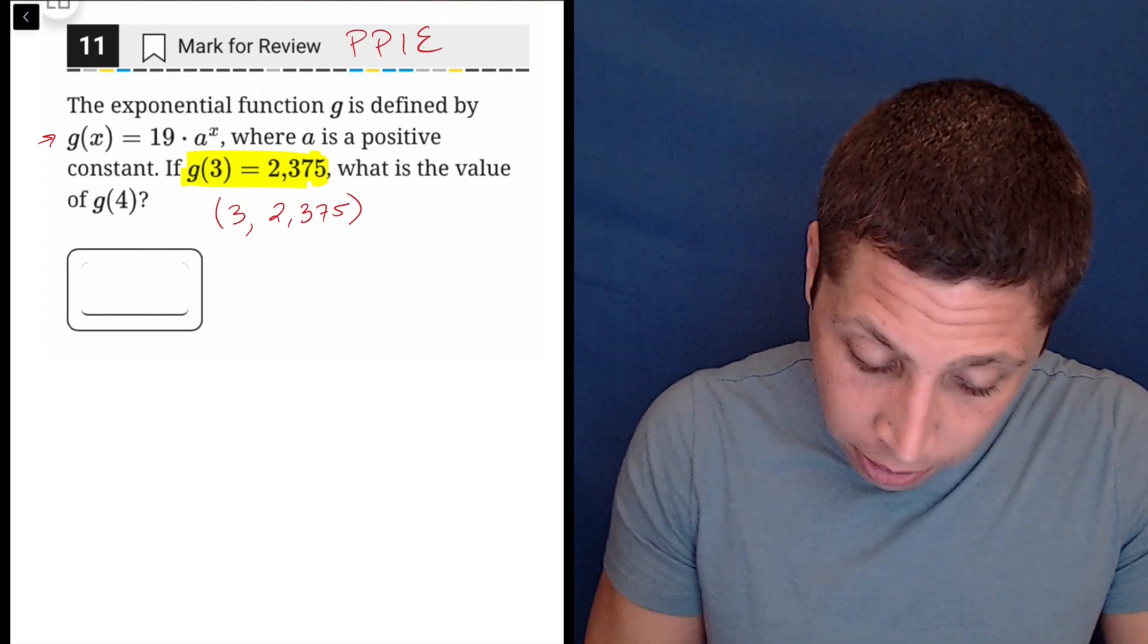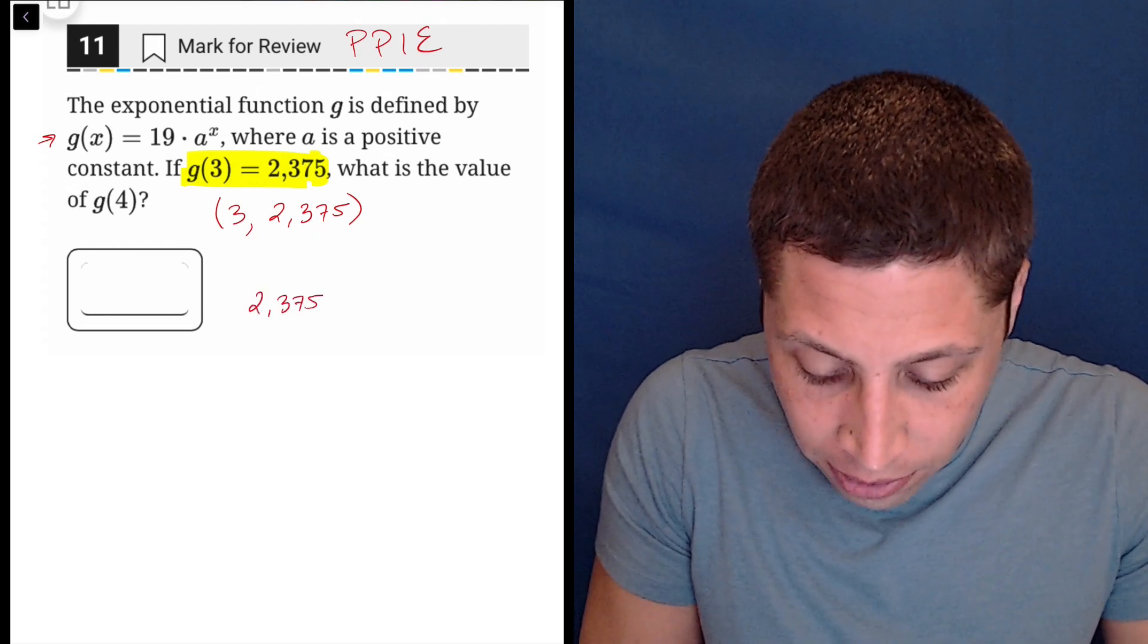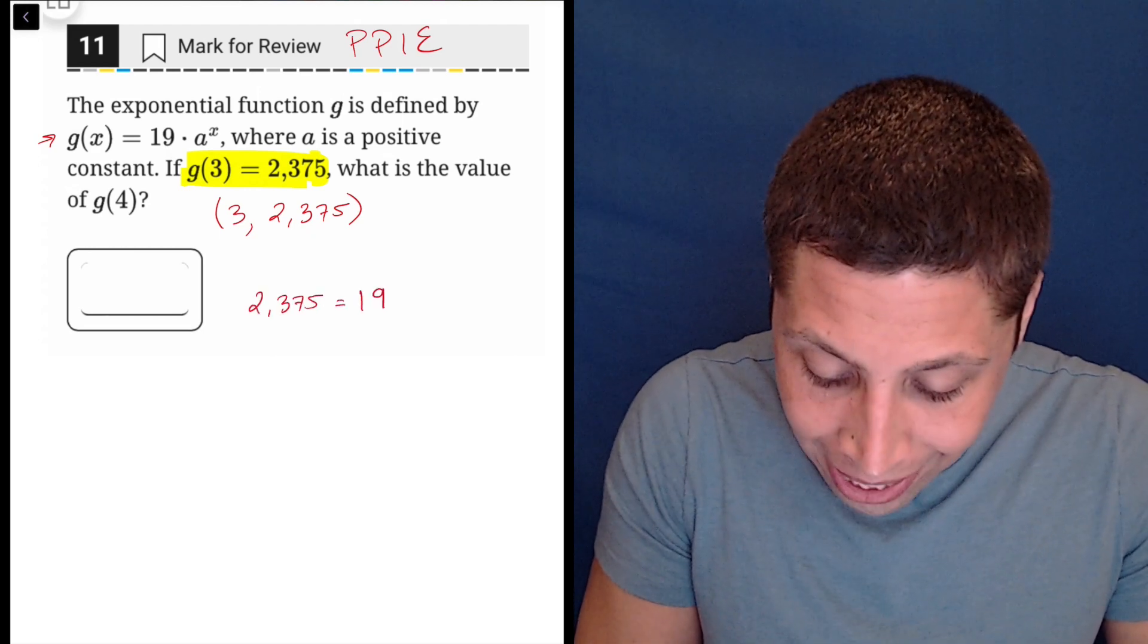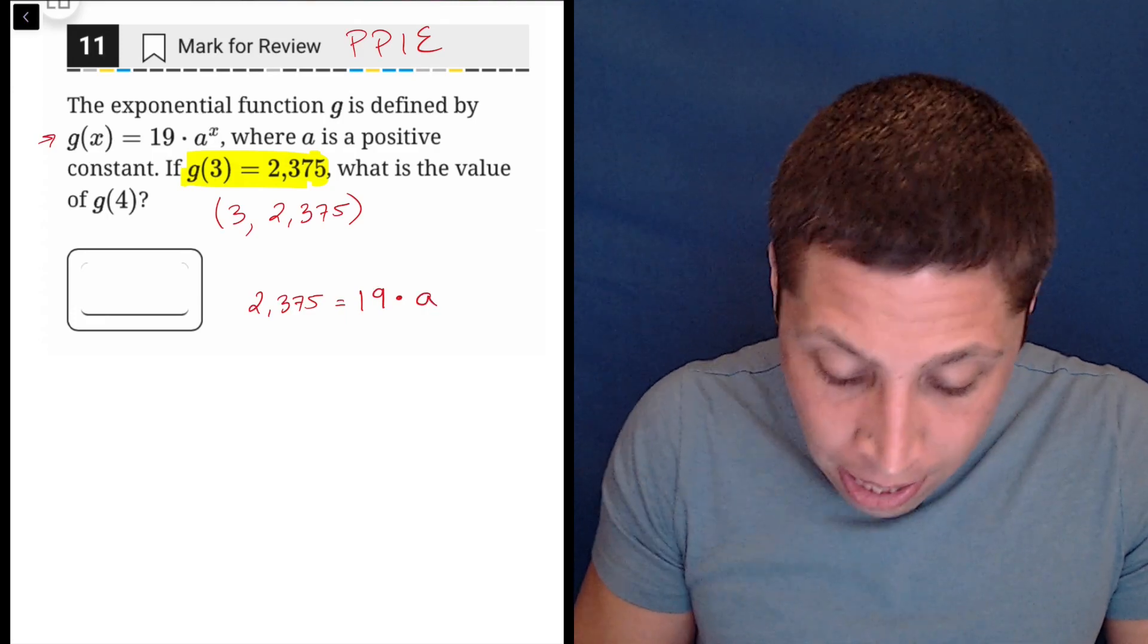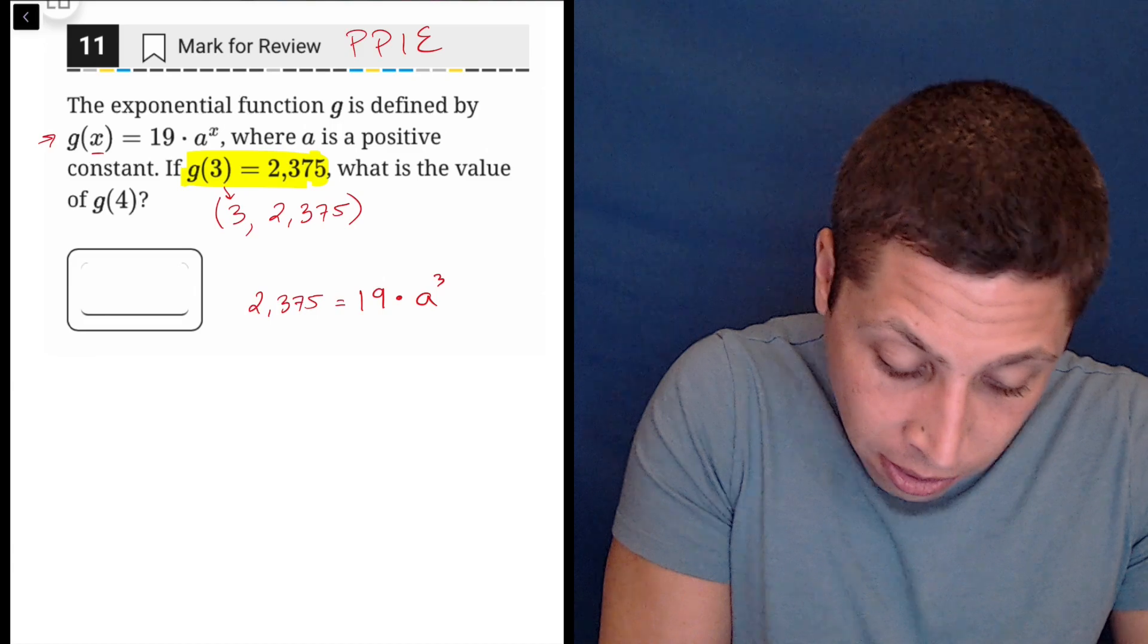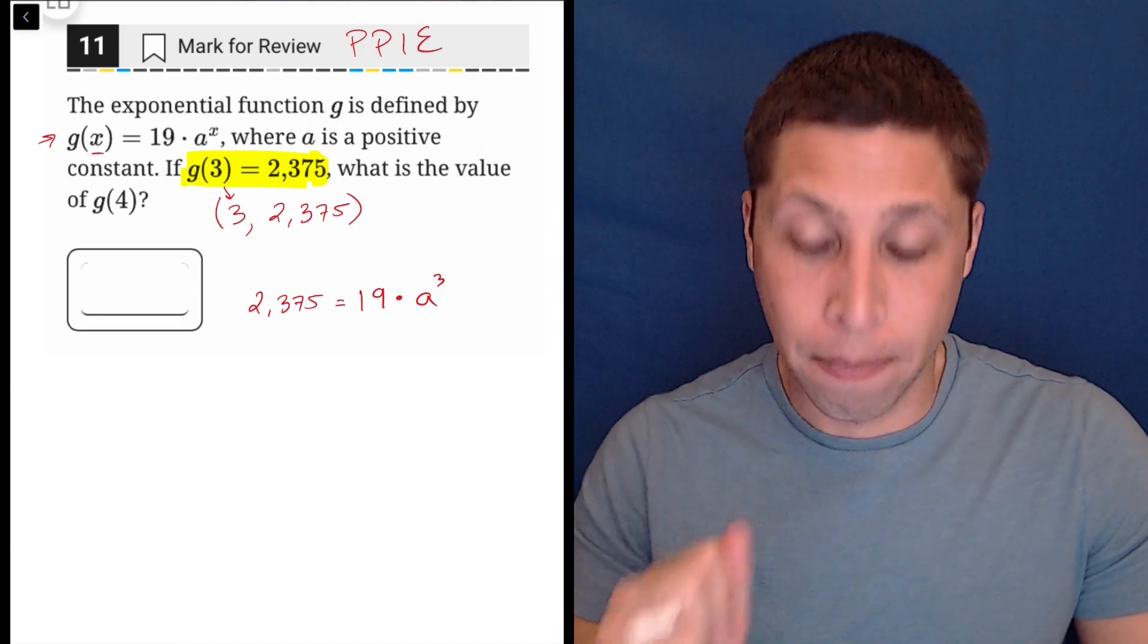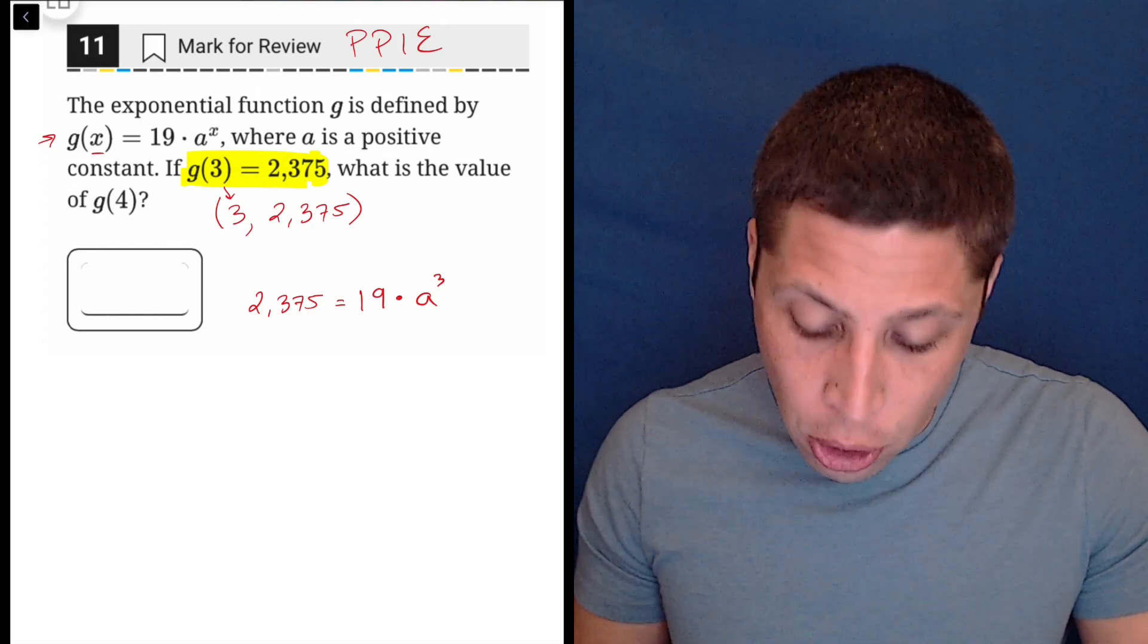Don't think too hard about it. So the y coordinate, or the g in this case, is 2375 and that is equal to 19 times a to the x. The x coordinate is this 3 because notice the 3 is in place of the x on the g of x setup. So it's kind of annoying.